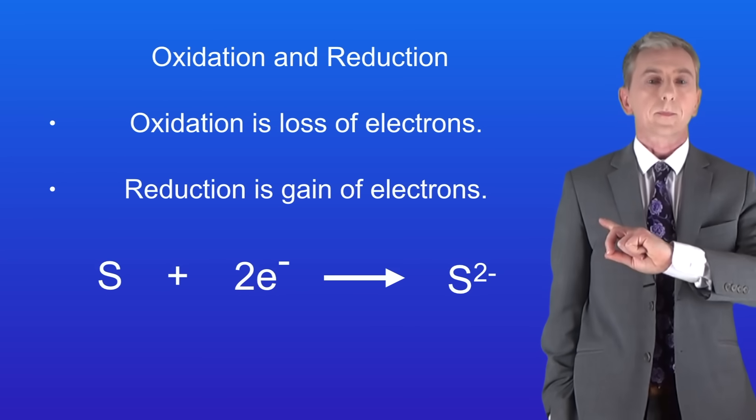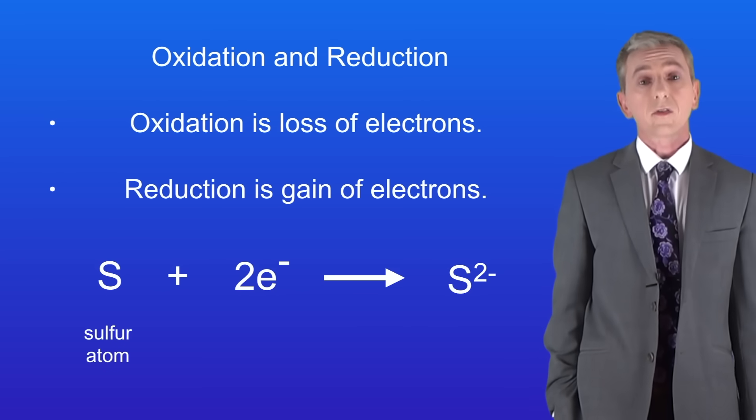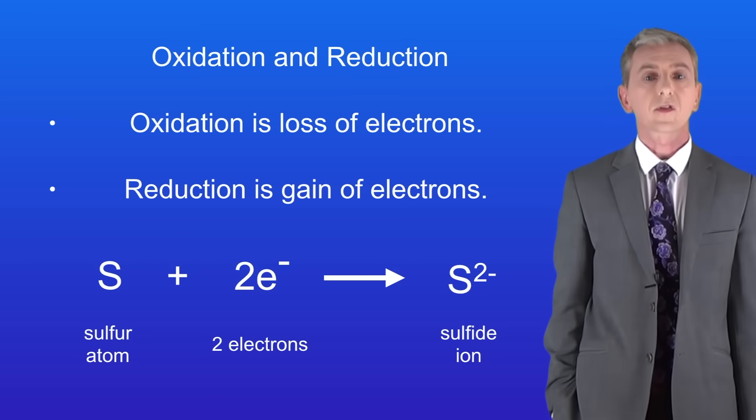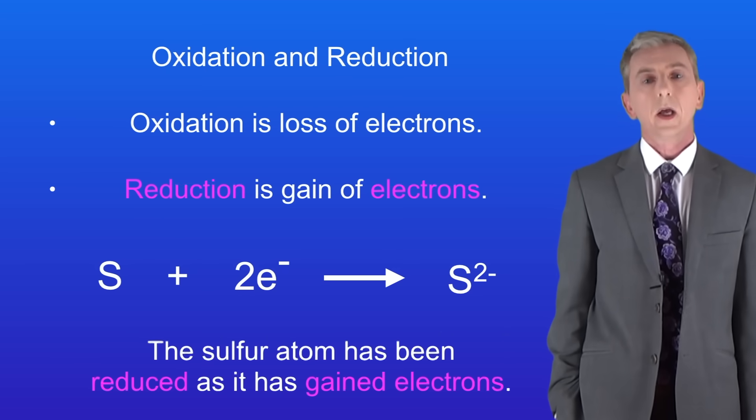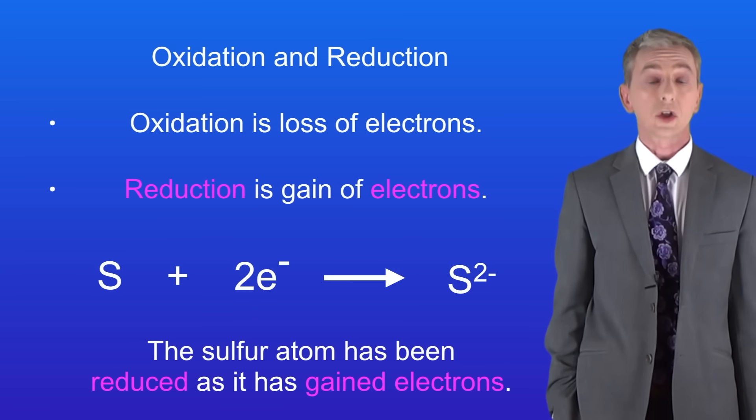Here's another example. A sulfur atom has gained two electrons and formed the sulfide ion. We can see that in this case, the sulfur atom has been reduced as it has gained electrons.